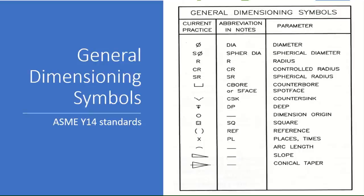For the square symbol, if the dimension is to be used as a reference — meaning tolerances are not applied — then we put the numbers in parentheses. How many places a particular feature is used, for example chamfers at so many places, is indicated by a cross. Arc length, slope, and conical taper symbols are also included. These are all important symbols and abbreviations to note so that we can create engineering drawings that adhere to ASME reporting standards.